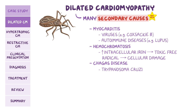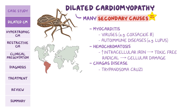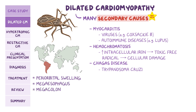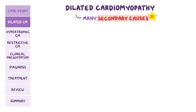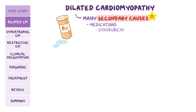Other causes include Chagas disease, a parasitic infection caused by Trypanosoma cruzi, which is transmitted by the kissing bug. A clue on the exam would be someone who recently traveled to South America and has clinical features like periorbital swelling, megaesophagus, and megacolon. During pregnancy, the body demands more cardiac output, and sometimes the heart fails to meet this demand, causing peripartum cardiomyopathy, which commonly occurs in the last trimester and up to six months after delivery. Dilated cardiomyopathy can also result as a side effect of medications like doxorubicin, a chemotherapeutic agent, or trastuzumab, a monoclonal antibody.